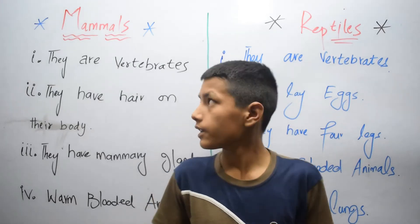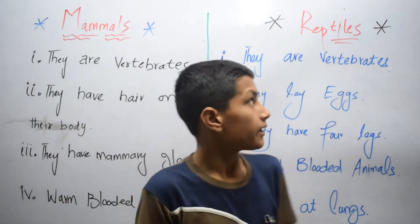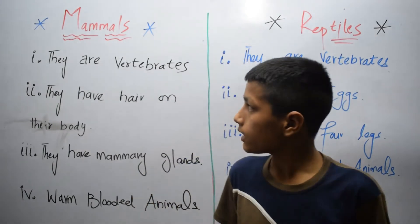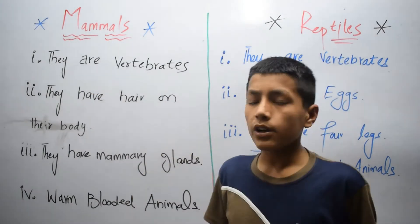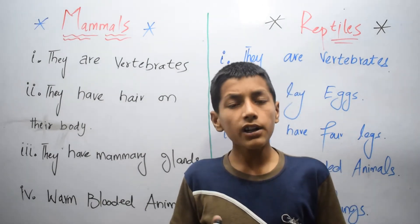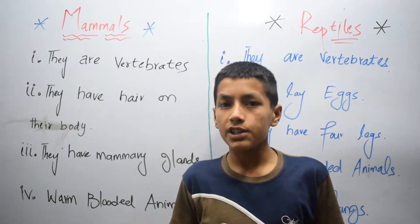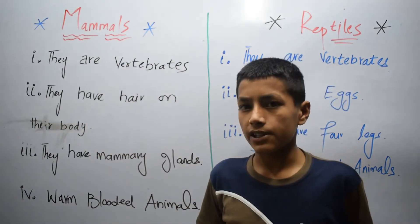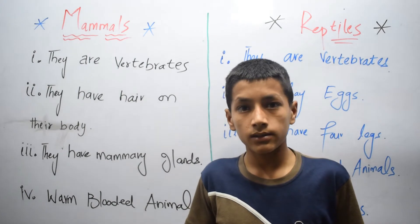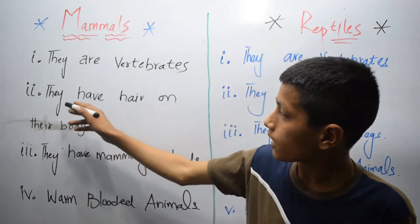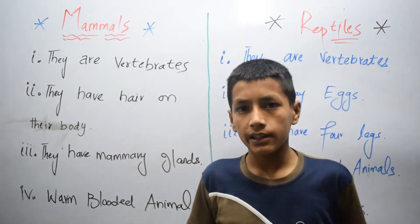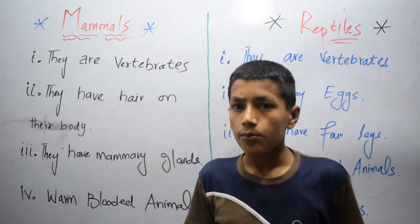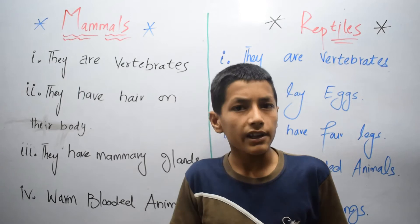Let's talk about the difference between mammals and reptiles. Mammals are vertebrates. Vertebrates are those animals which have a backbone. Mammals are vertebrates because they have a backbone and they have hair on their body. These hairs protect mammals from coldness and environmental hazards.